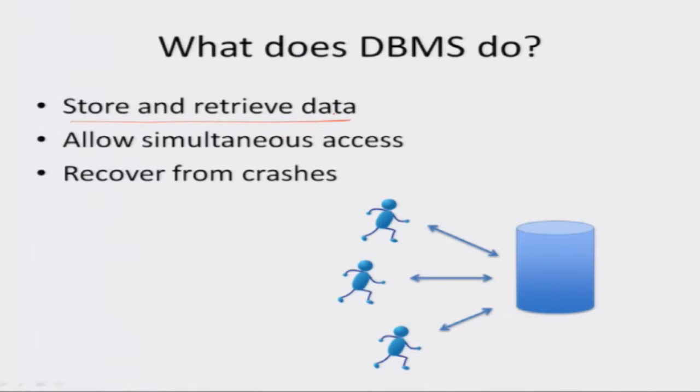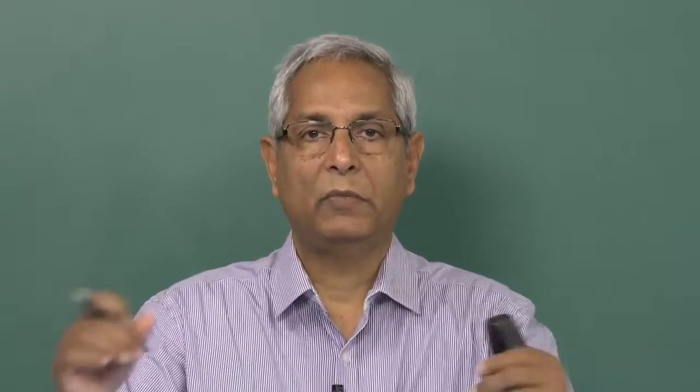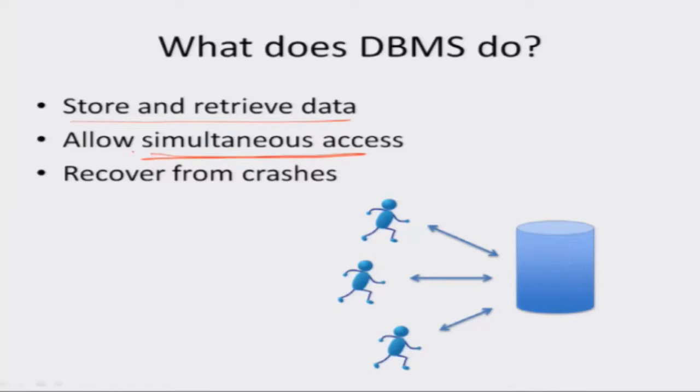There is another more complicated function that it does. Let's say two people simultaneously want to read or write into the disk. To give an example, there is one train ticket from Delhi to Kanpur and two people want to buy it — I have to permit only one person to buy the ticket; I can't issue the ticket to both people. This is called concurrent access, and a DBMS engine has built-in mechanisms to permit multiple people to access data simultaneously.